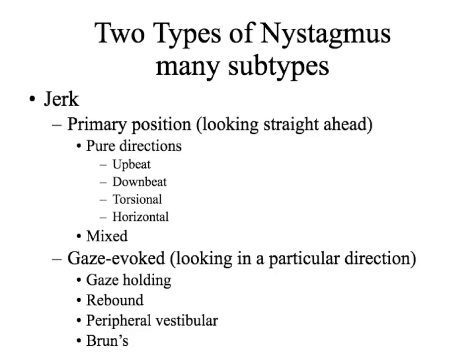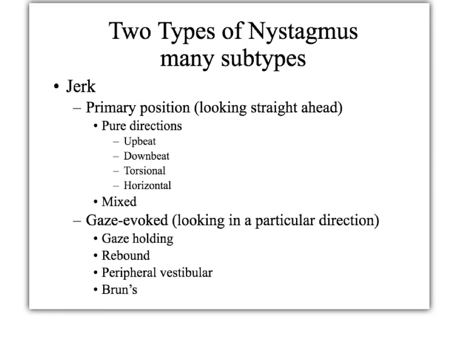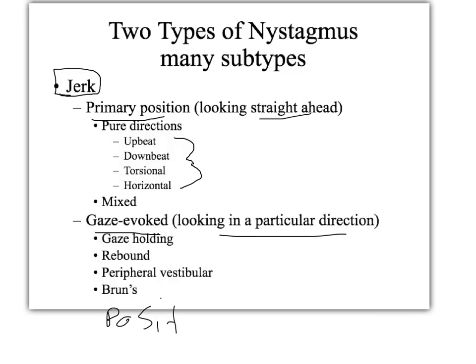The first main type of nystagmus is the jerk type, classified by the eye movement and the triggering factor. Triggering factors include looking straight ahead, looking in a particular direction, or body position. Typically, the eye moves slowly in one direction and then snaps back quickly — called the slow phase and fast phase, respectively. The direction of a nystagmus is defined by the fast phase, so an upbeat has a slow phase moving down and a fast phase moving back up; downbeat is the opposite.